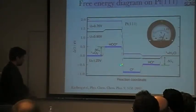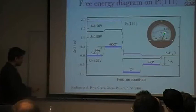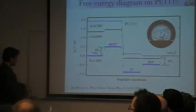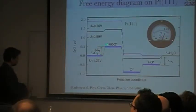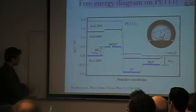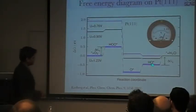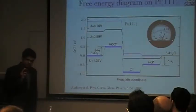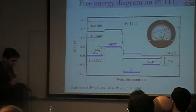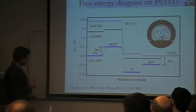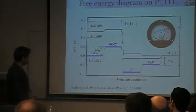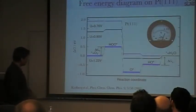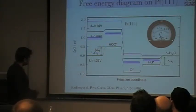Now can you run this reaction at 1.23 volts? Well no, because you have to pay a thermodynamic penalty to get OOH onto the surface. You also have to pay a thermodynamic penalty to get OH off the surface, right? So these are the two difficult steps in this process. Getting oxygen onto the surface as OOH and getting rid of OH as water. Now what you have to do? Well you have to crank down the potential and go to about 0.6 volts.